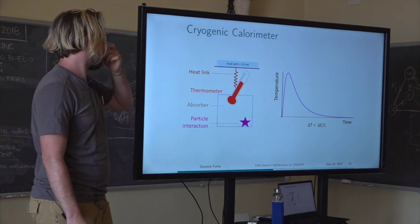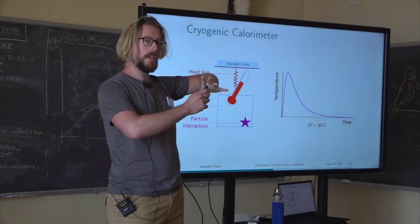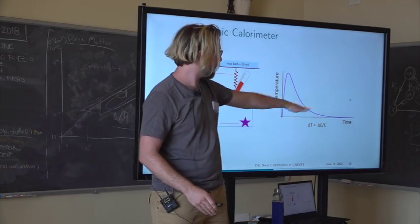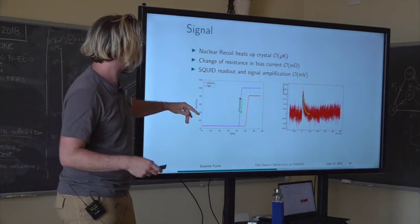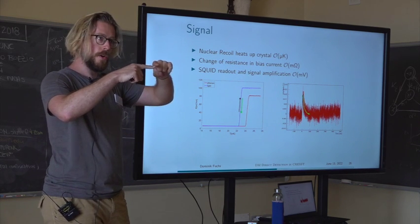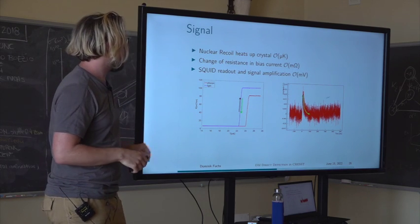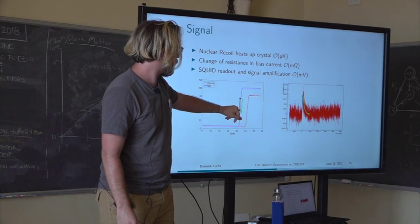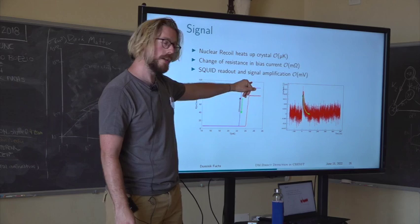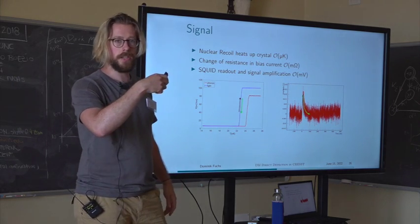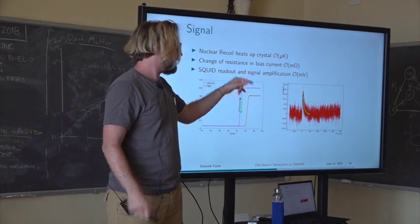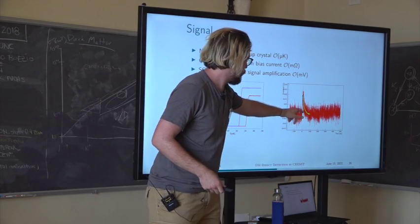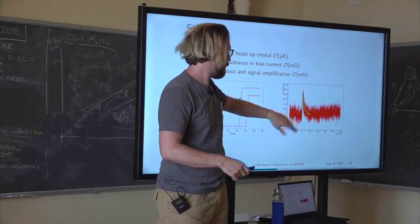The basic principle of the cryogenic calorimeter is: a particle interaction heats up the whole crystal, producing a pulse that rises and then slowly decays back to base temperature as the crystal couples to a heat bath. In more detail, these sensors have a little bias current running through them and are kept at an operating temperature of between 10 and 30 millikelvin, right in the transition between the normal conducting and superconducting state. When the crystal heats up by even a few microkelvin, the resistance changes by milliohms, and this is read out with SQUIDs and amplified to give our signal.